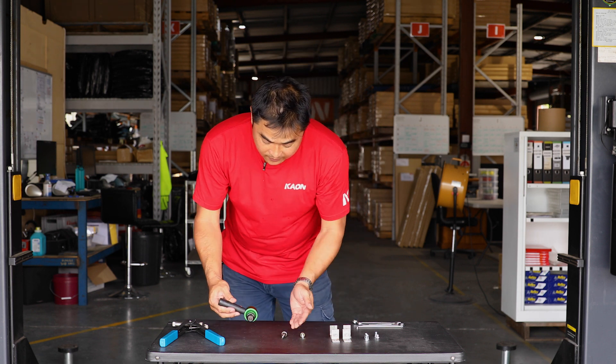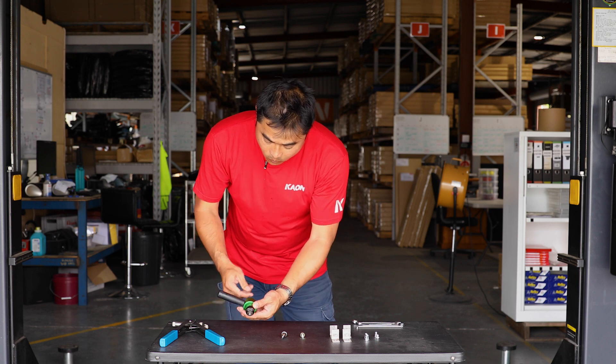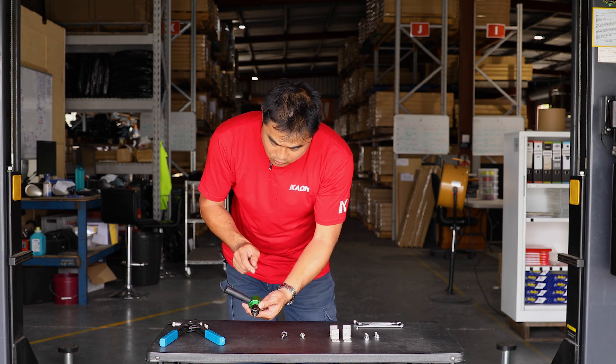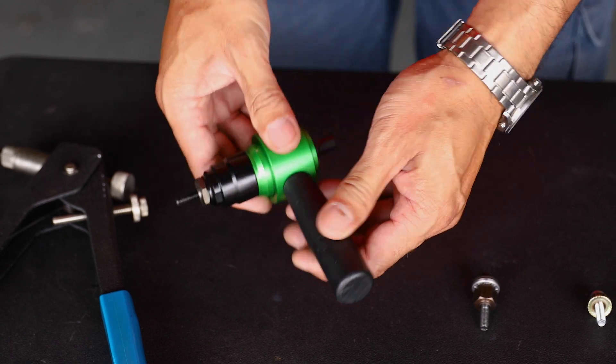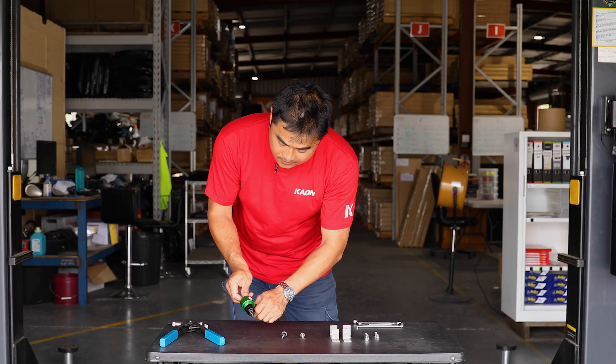This one here is again a progression of that tool where it's very similar but you can actually put a cordless drill in the back and it's got a nice handle so you don't have to hold an open spanner to set the nutsert.